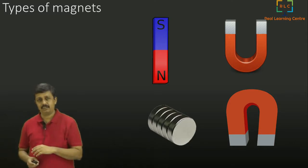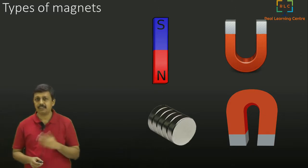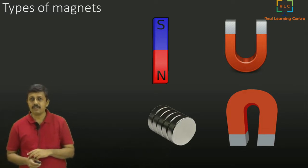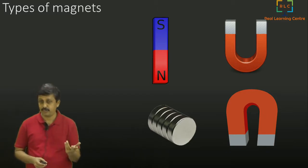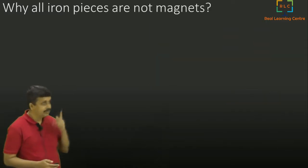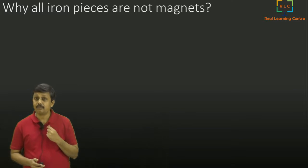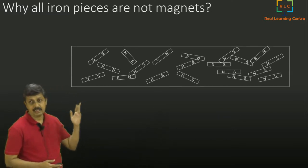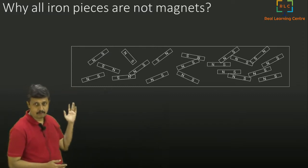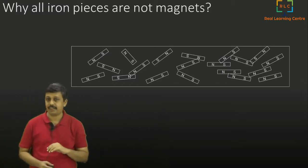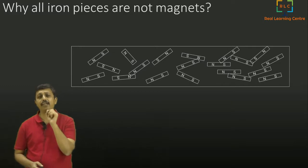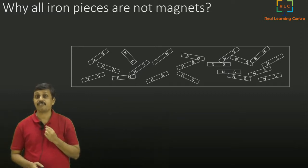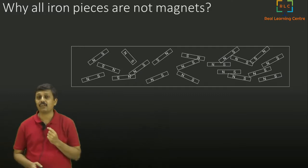Magnets are not separate elements — they are like iron, nickel, and many other metals that can have magnetism. So when do these metals have magnetism and when do they not? If you take a closer look at an iron piece, inside you can see at a micro level there are millions and billions of very small magnets. These small magnets are called magnetic domains.